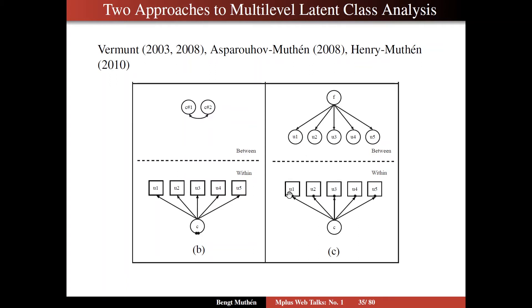That is, we want to put the random intercepts on the indicators themselves, rather than on the latent class variable. So the indicators have random intercepts, and they become continuous latent variables on between. And to reduce the dimensionality, you could put a factor behind them, reducing then the numerical integration in maximum likelihood estimation from 5 to 1, which you get if you don't have these residuals. They are typically quite small in applications when the between-level corresponds to clusters, as opposed to individuals, as we will see later on.